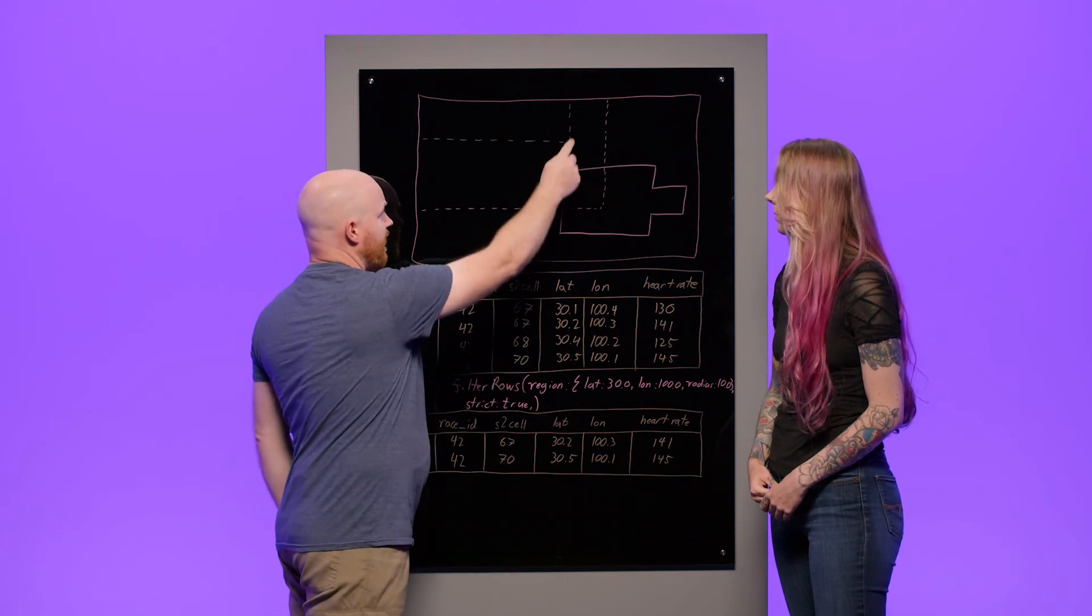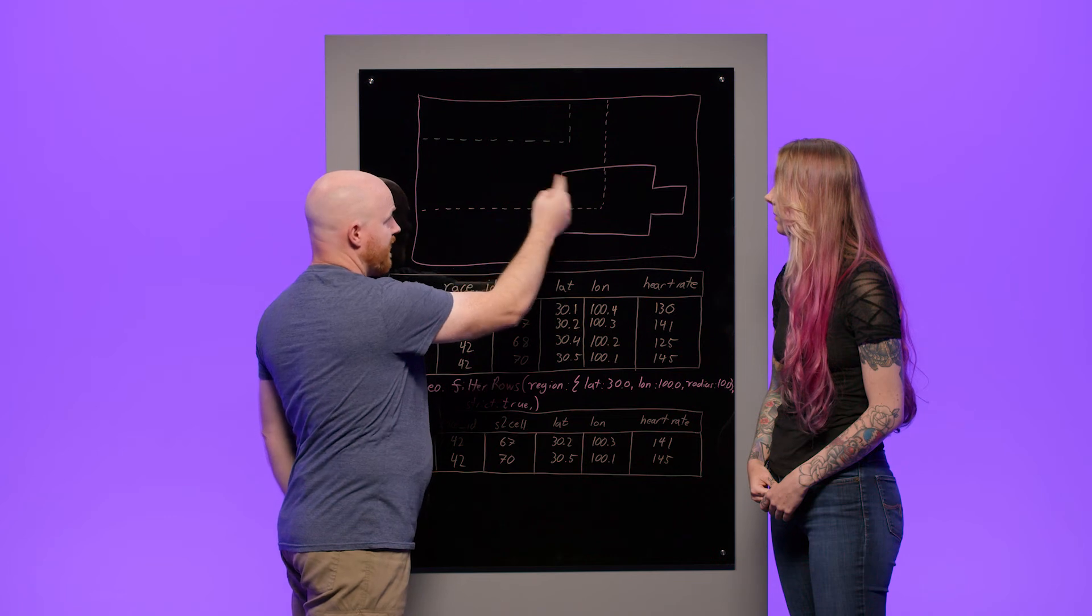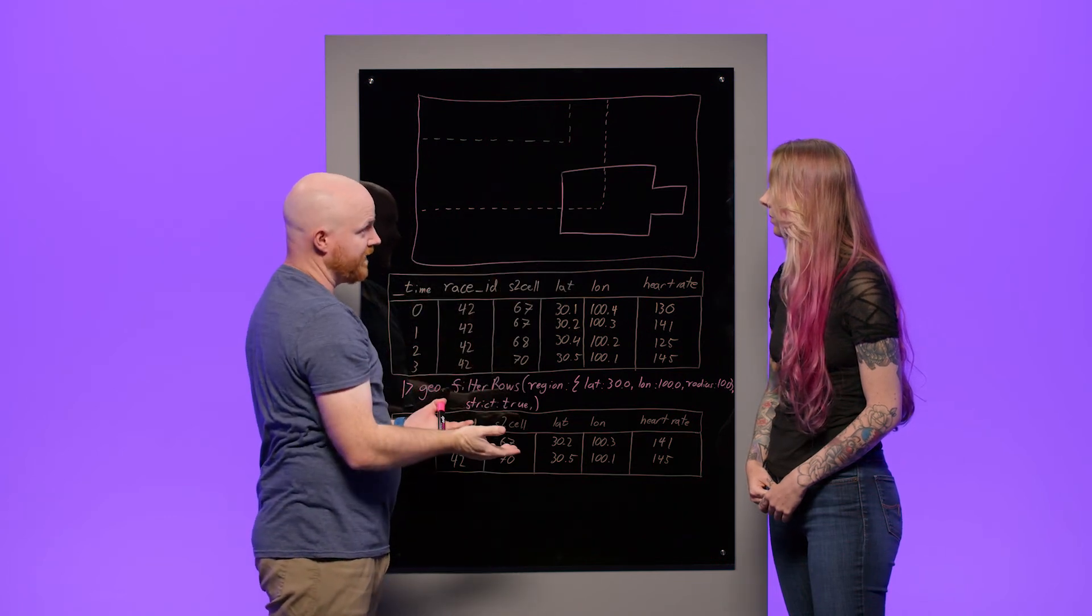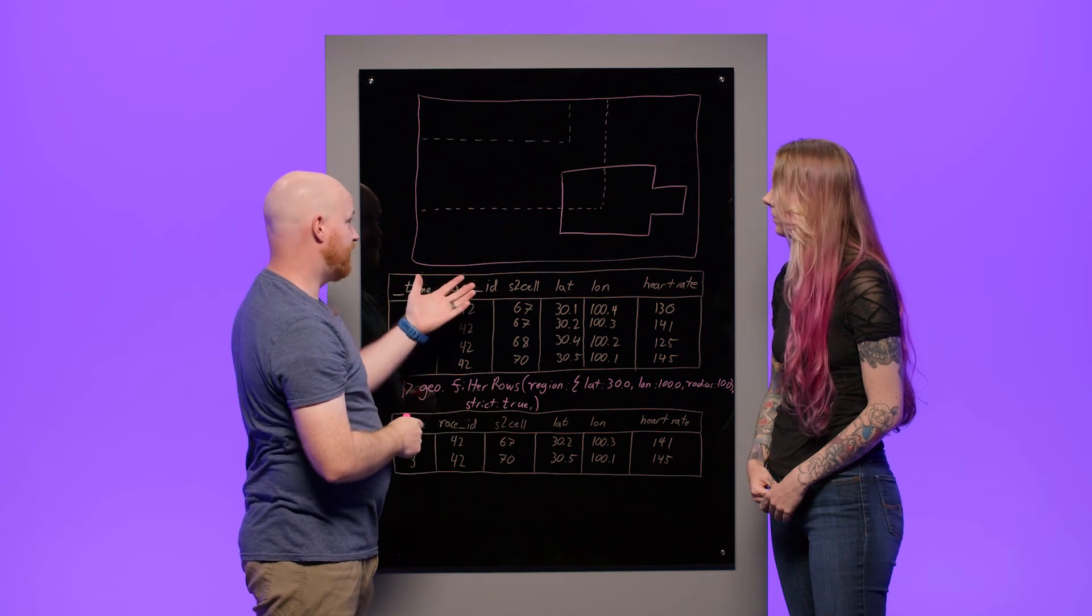But it's possible that a track that comes near the region, but not actually inside it, is still in the same cell, and so we would falsely include that one. It's really fast to do that computation.